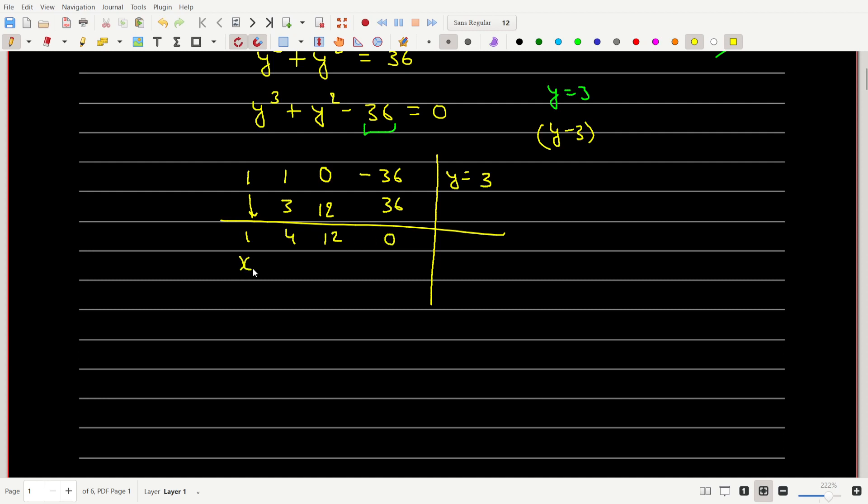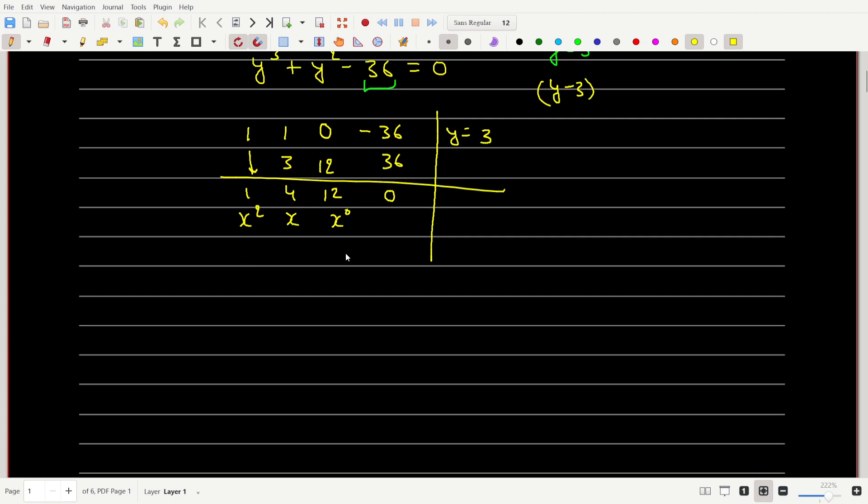So 1 will be coefficient of y square, 4 will be the coefficient of y, and 12 will be the constant. Which means y square plus 4y plus 12.